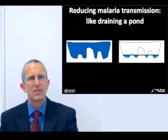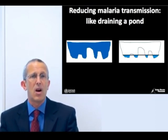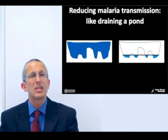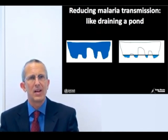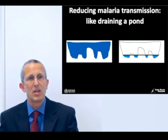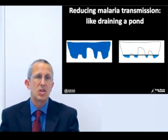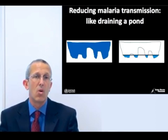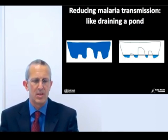Ten years into this fight the pond is starting to be drained — there are high spots where there's no malaria and spots where there's still a lot of ongoing transmission. Being able to see the bottom, which we can only do through surveillance, allows us to figure out where we need to keep doing what we've been doing, where we need to change course, and where we potentially just need more resources.